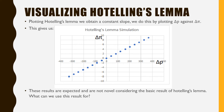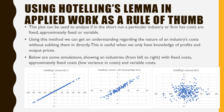This is unsurprising because this is exactly what Hotelling's Lemma states. So this chart is pretty basic, and we want to know what we could use it for — what new information could we learn from having a chart like this? This plot can be used to analyze if in the short run a particular industry or firm has costs which are fixed, approximately fixed, or variable. Using this method, we can get an understanding of the nature of an industry's costs without summing them directly.